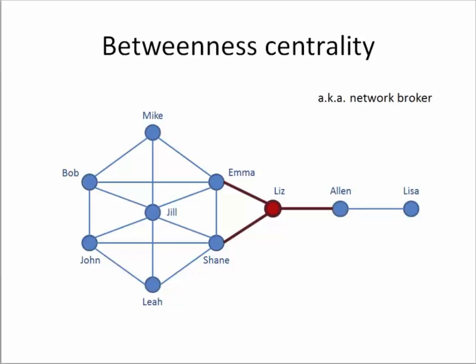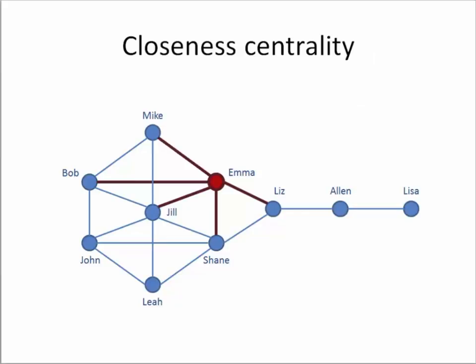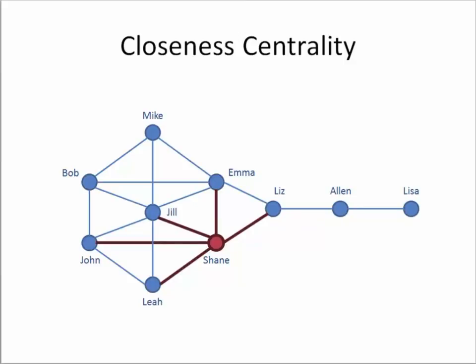On the other hand, although Liz is quite important for controlling communication between these two potentially separate subgroups, Liz does not have easy access to everybody else in the network. For that measurement, there is another measure called closeness centrality. Closeness centrality is used to measure the ease, or the shortest distance, of a node to anybody else in the network. In this case, we can see that Emma and Shane have easy access to everybody else, needing at most two to three hops. Therefore, closeness centrality indicates how quickly they can get to anybody else in the network.